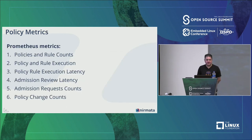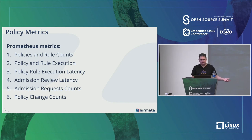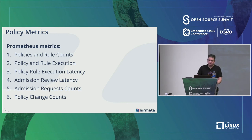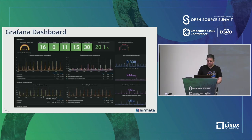Kyverno also has built-in metrics exported in Prometheus format. You can track how many times rules have been executed and how many errors exist across clusters. These metrics are granular and can be filtered with labels. There's a Grafana dashboard available in the community to get started with, and you can extend and build your own as well.